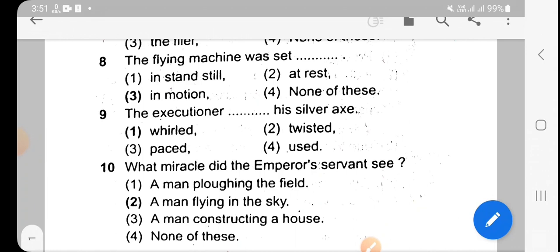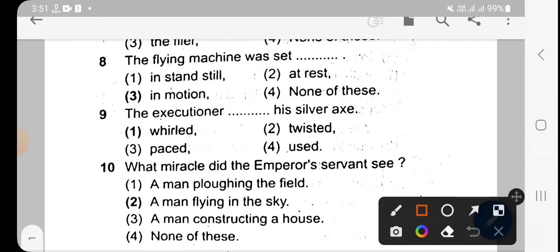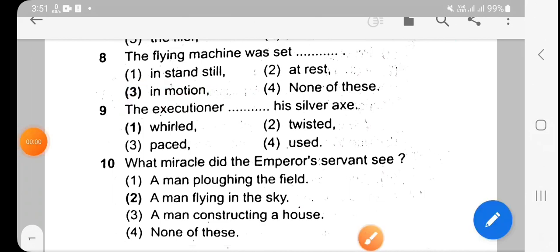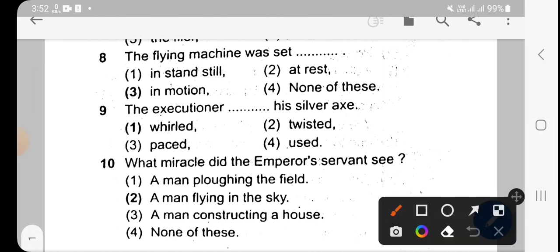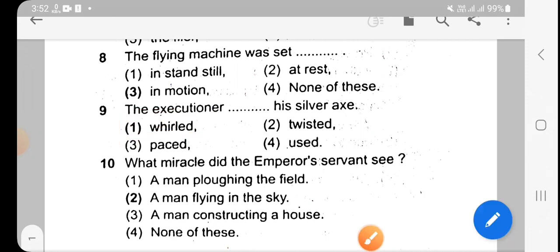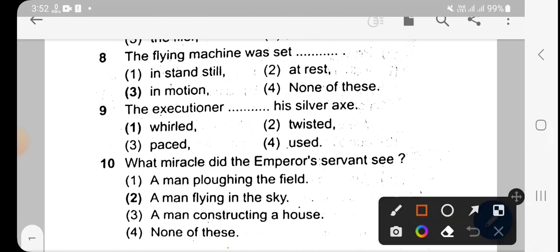The answer is in motion. Next question: What miracle did the Emperor's servant see? The options are: a man plowing the field, a man flying in the sky, a man constructing a house, or none of these. The answer is a man flying in the sky.